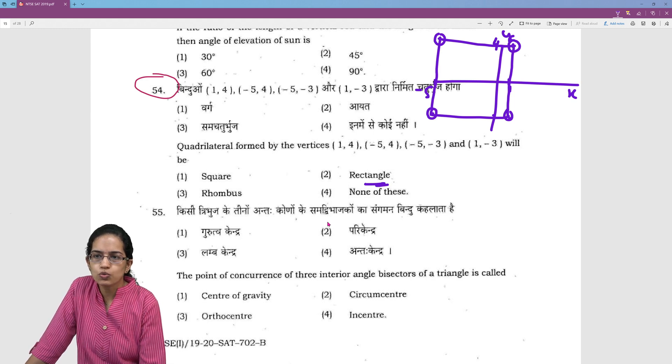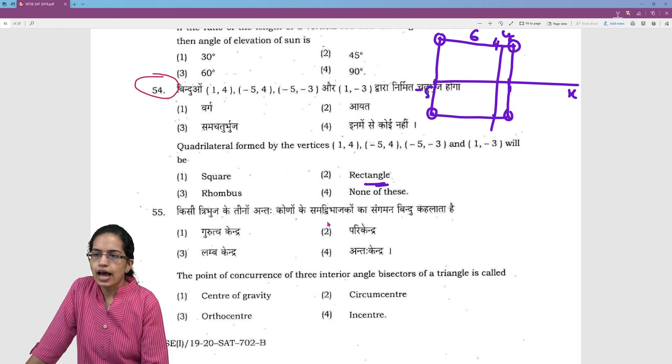So this would be a straight line that I would join. And this would be a rectangle not a square. Why? Because it is 1 plus 5 which is 6 on this side. And 4 plus 3 which is 7 on this side.